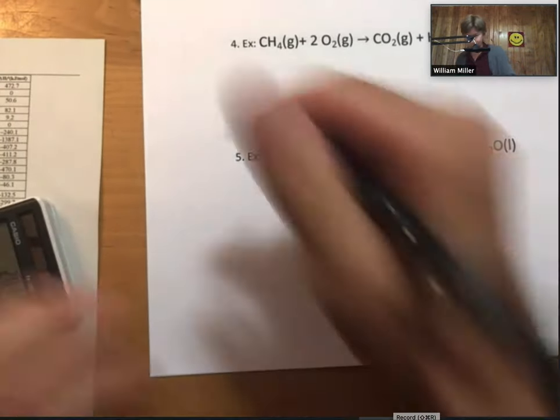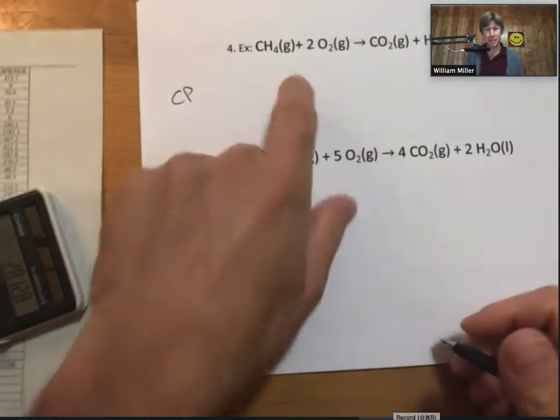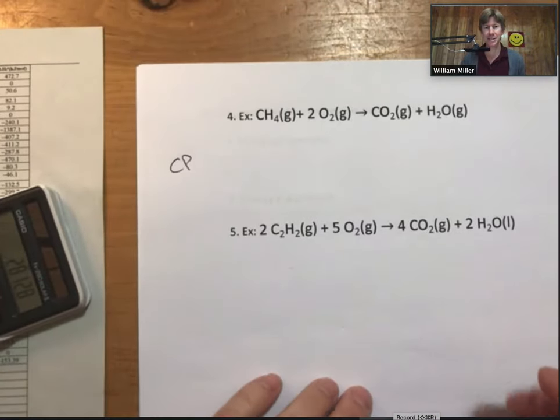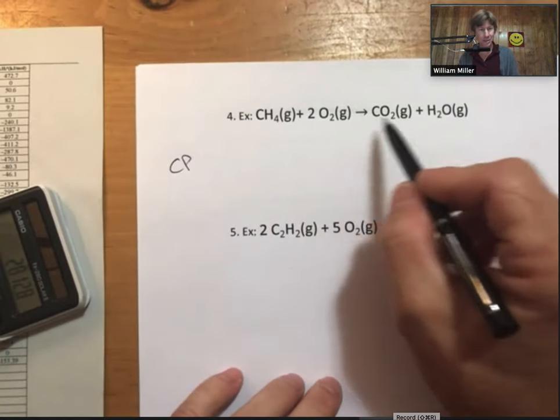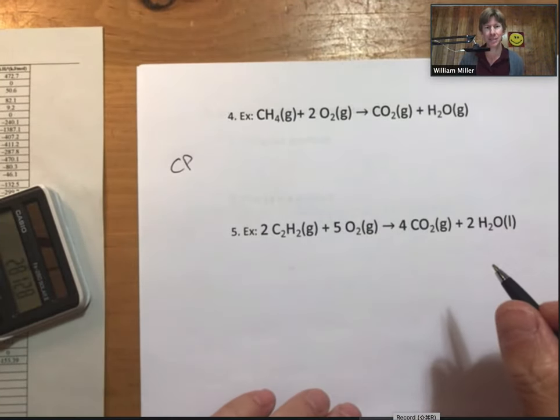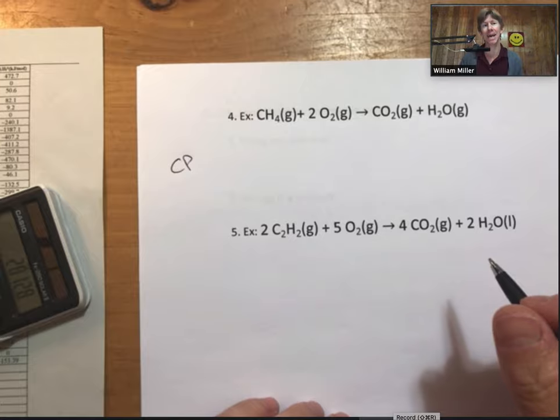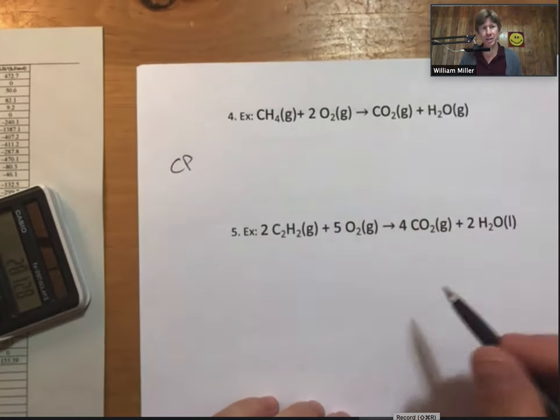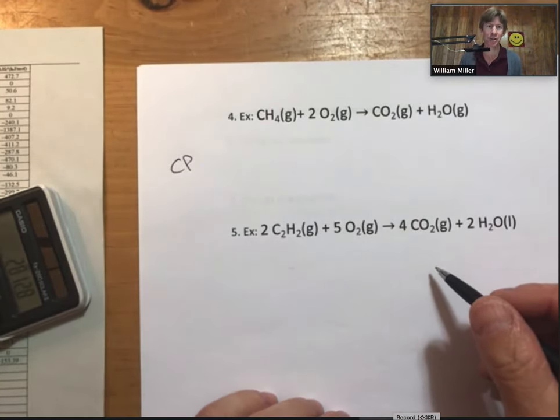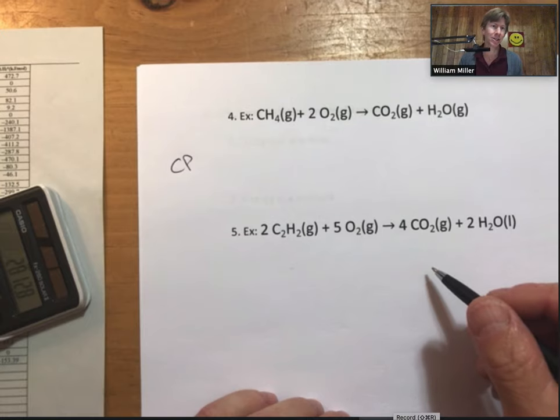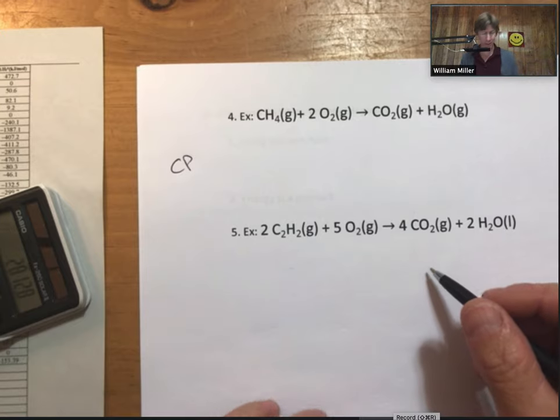Alright, this first one will be a companion problem. It is a combustion reaction. Combustion reactions tend to be exothermic because they are used to create energy. CH4 is methane, also known as natural gas. So, when you do this calculation, delta H reaction better be negative and pretty negative as well.